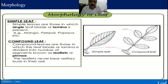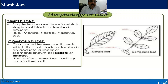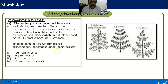Simple leaves are those in which a single leaf blade or lamina is present — for example, mango, peepal, and papaya. Compound leaves are those in which the leaf blade or lamina is divided into a number of segments known as leaflets or pinnae. The leaflets never bear axillary buds in their axils. In pinnate compound leaves, the leaflets are present laterally on a common axis called the rachis, which represents the midrib of the leaf. Examples include Gulmohar and Cassia.